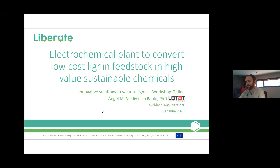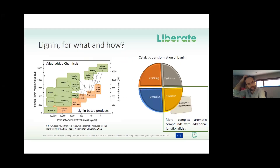Today we are talking about lignin, specifically the utilization of electrochemical processes to obtain higher value chemicals from lignin. An important consideration when deciding to obtain value chemicals from lignin is to decide which kind of lignin to use. As shown in this graphic, if you want to obtain high added-value chemicals, you have to use lignin-based products with a higher sales value. It was essentially impossible to obtain high added-value chemicals from the lowest cost lignin products.